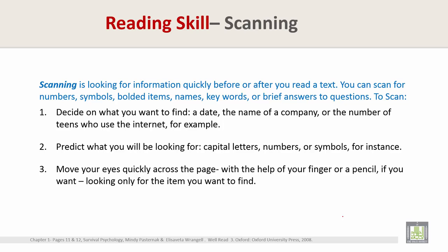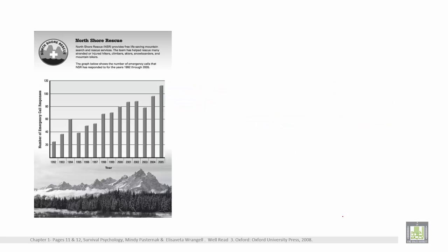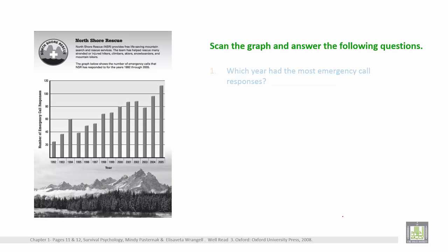Step two: predict what you will be looking for — capital letters, numbers, or symbols. Step three: move your eyes quickly across the page, with the help of your finger or pencil if you want, looking only for the item you want to find. Now, here is your graph. Scan this graph and answer the following questions.